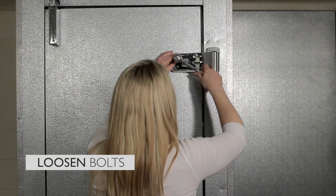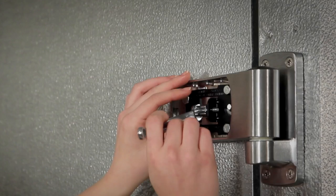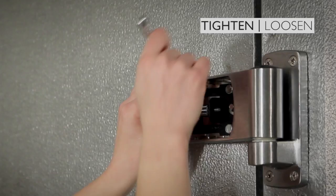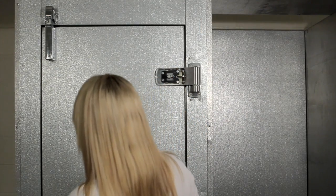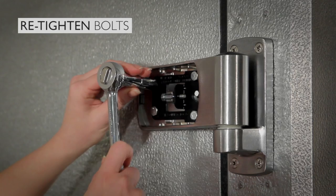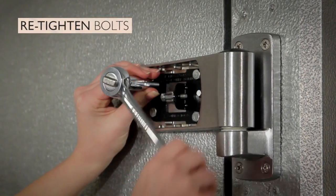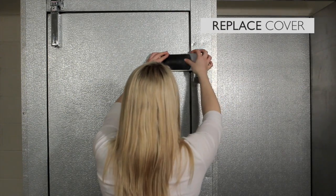Then, loosen the bolts underneath. Next, tighten or loosen the adjustment screw until the door is square. Then, re-tighten the bolts. Replace the cover and you're done.